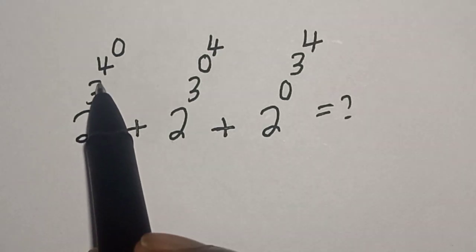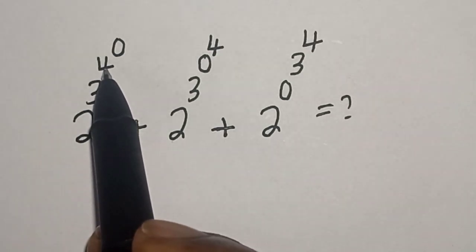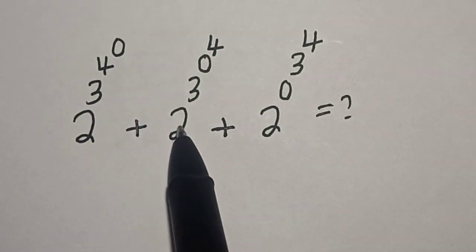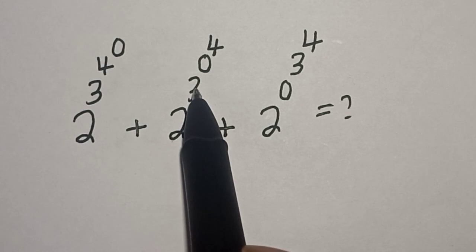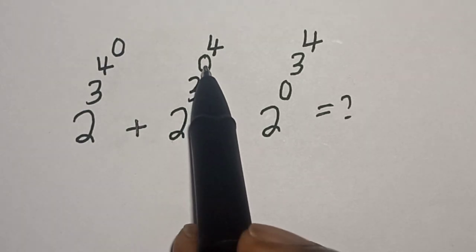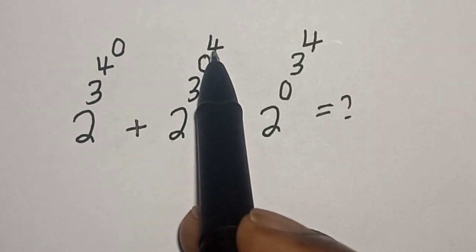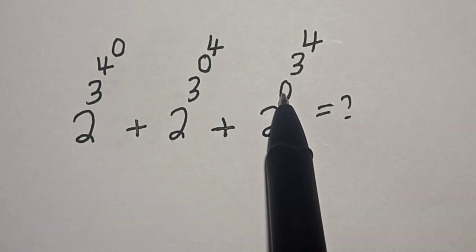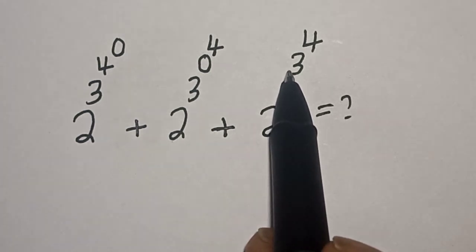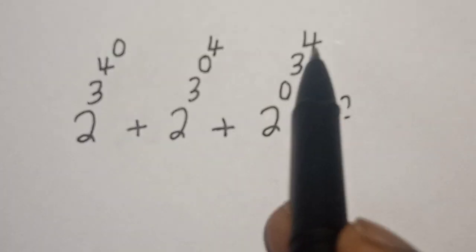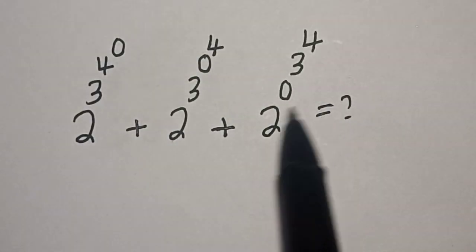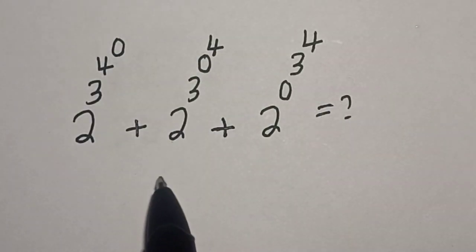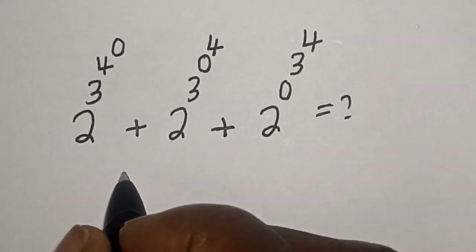2 to the power of 3 to the power of 4 to the power of 0, plus 2 to the power of 3 to the power of 0 to the power of 4, plus 2 to the power of 0 to the power of 3 to the power of 4 is equal to what? Like, share, comment and subscribe. Solution.